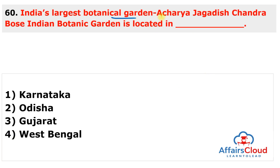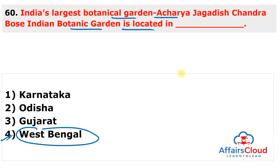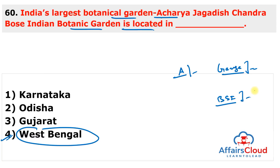Question 60: India's largest botanical garden, Acharya Jagdish Chandra Bose Indian Botanical Garden, is located in which state? The answer is West Bengal. The botanical garden in Howrah, West Bengal is under threat from severe land erosion by the Ganga River, as flagged by experts during a recent site visit. The garden is under the jurisdiction of the Botanical Survey of India.